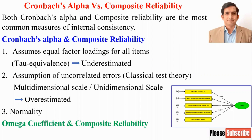So, if all three assumptions — tau equivalence, classical test theory, and normality — are met, then Cronbach alpha is an appropriate estimate for internal consistency.